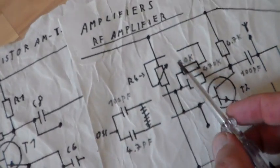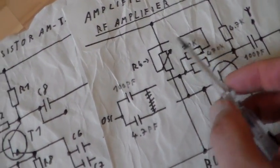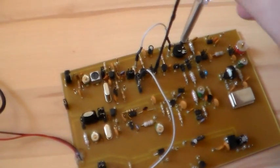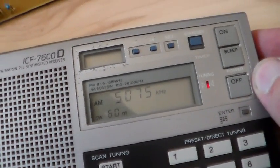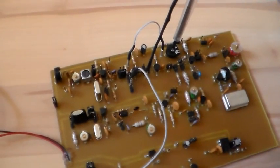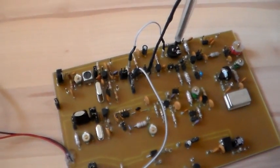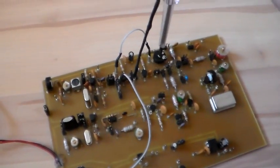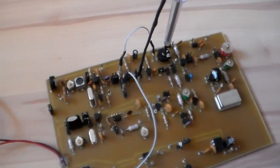Frequency has been changed and what is important here is the working point from our second transistor. This is the working point not set up correctly. As you can hear there is no modulation at all. But now I'm going to set the working point just right. This is too much, too little current, and this is the right current.